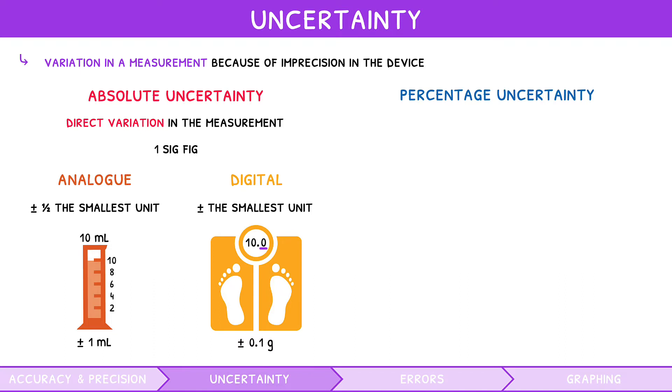Percentage uncertainty represents the absolute uncertainty as a percentage of the total value that it relates to. It is determined via the formula: percentage uncertainty equals absolute uncertainty divided by measurement times by 100. But why are these types of uncertainty important?